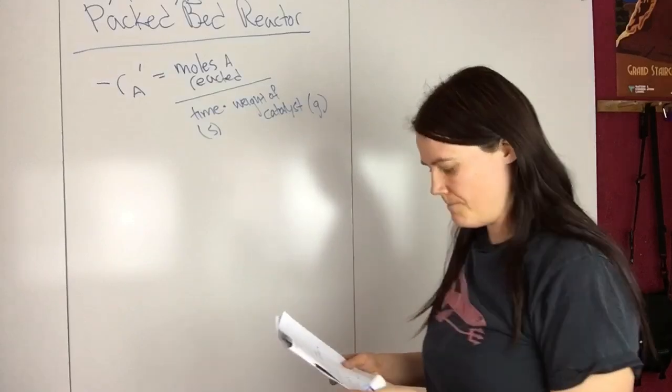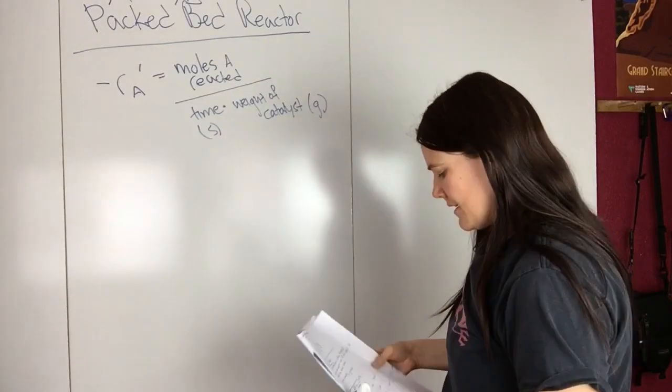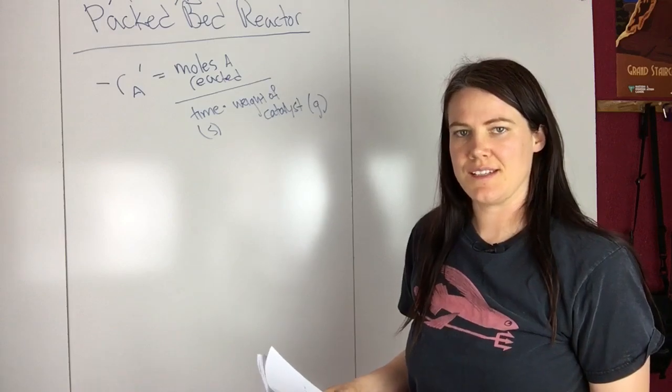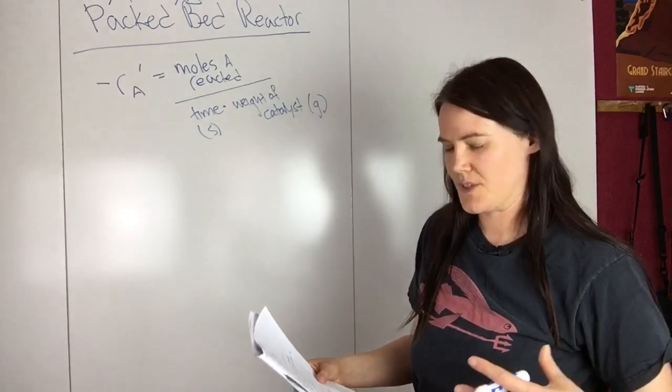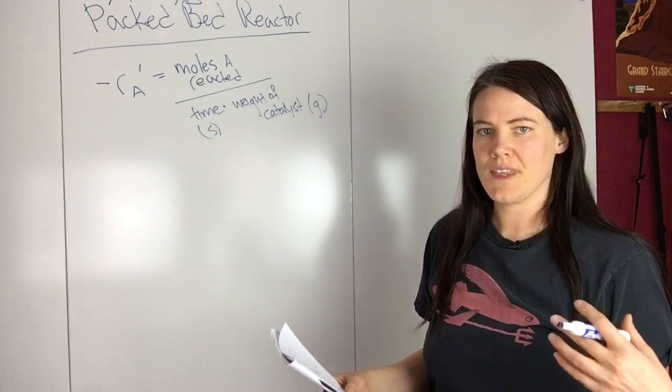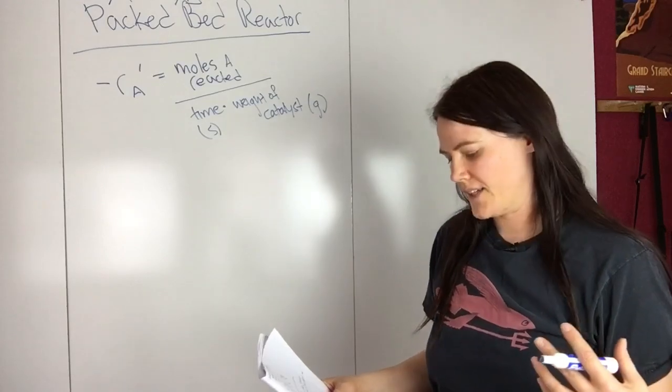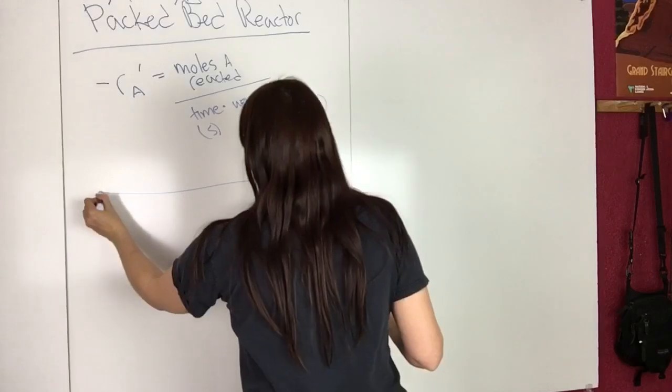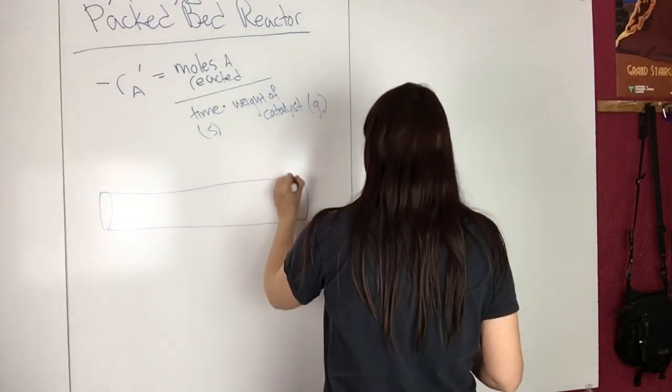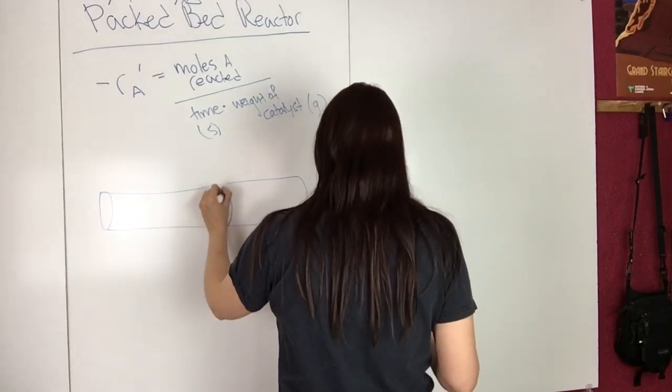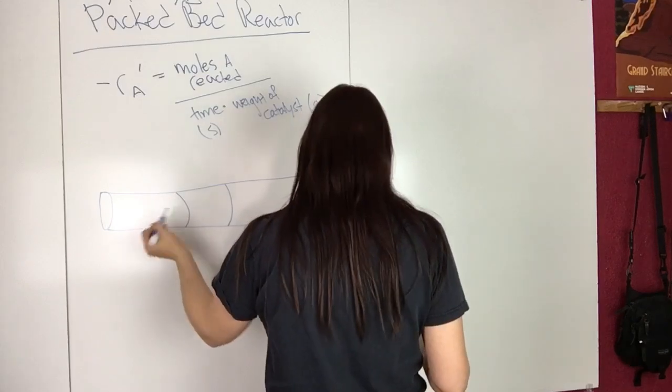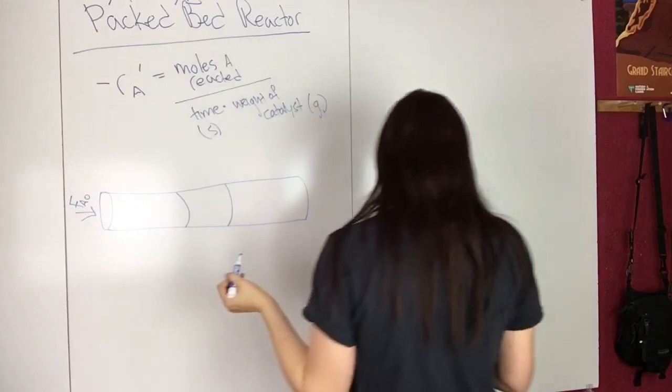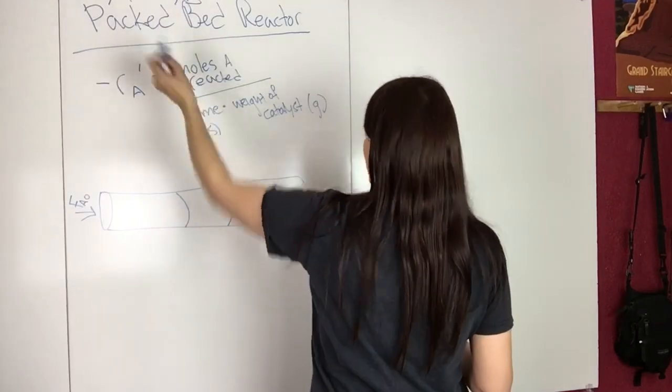And so to derive the mole balance for a packed bed reactor, I think it's easiest to, rather than going from the general mole balance equation, I think it's easier to do a balance on the reactor itself. So, here's the reactor, and you have a molar flow rate in, and again, assume we're looking at A.